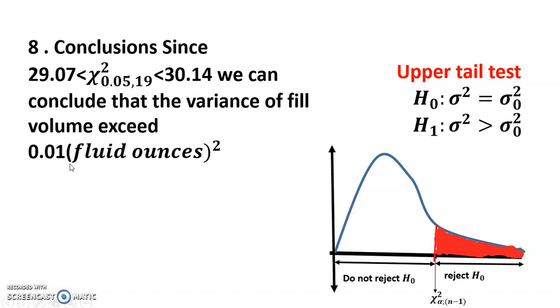This is an upper tail test. For the upper tail test, we reject when chi square is greater than chi square (1 minus alpha, n minus 1), which here is chi square (0.05, 19) equals 30.14. The computed value 29.07 falls in the do-not-reject region, so we do not reject the hypothesis. I hope that is clear for everyone, thanks for watching.